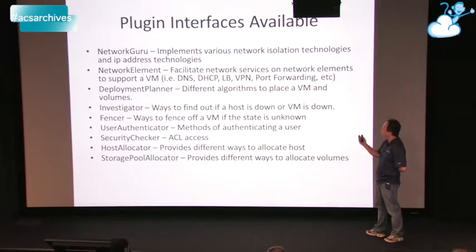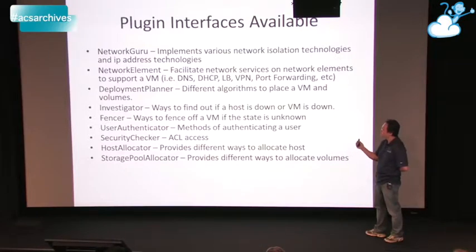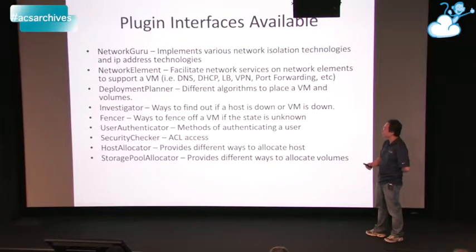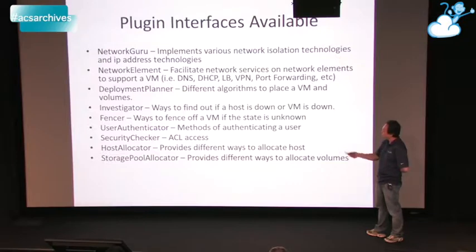We also have the idea of a deployment planner where people have different ideas of where a VM should be deployed and its volume created. For HA, there are also plugins where people can write code that says, in order to see whether a VM is down, I can do this for you — because we may not completely understand the technology deployed in the data center to investigate whether a VM has gone down, and being able to fence off the VM from accessing the network and hardware and disk before we can restart it.